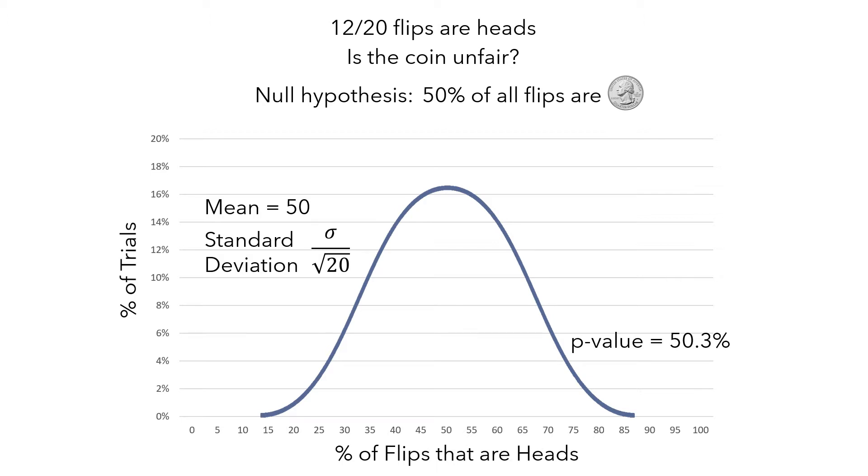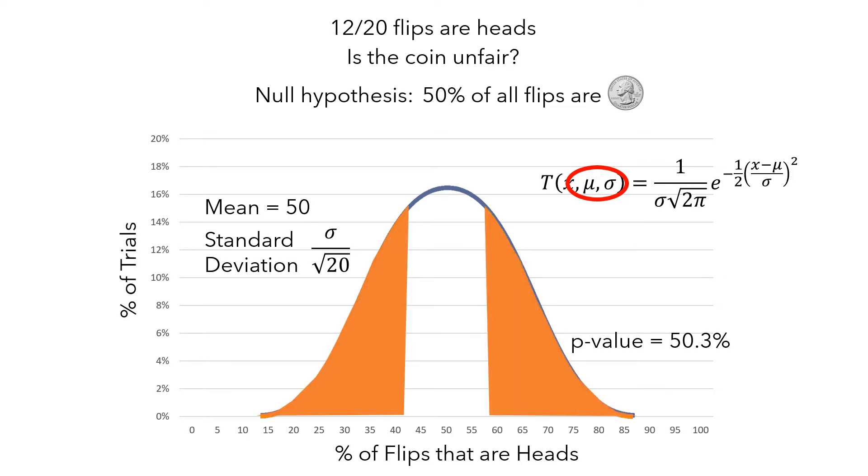This normal distribution is described by this formula. It's called parametric because it depends on the parameters mu, the population mean, and sigma, the population standard deviation. And we could use this normal model to compute the p-value using tools built into most statistical software.